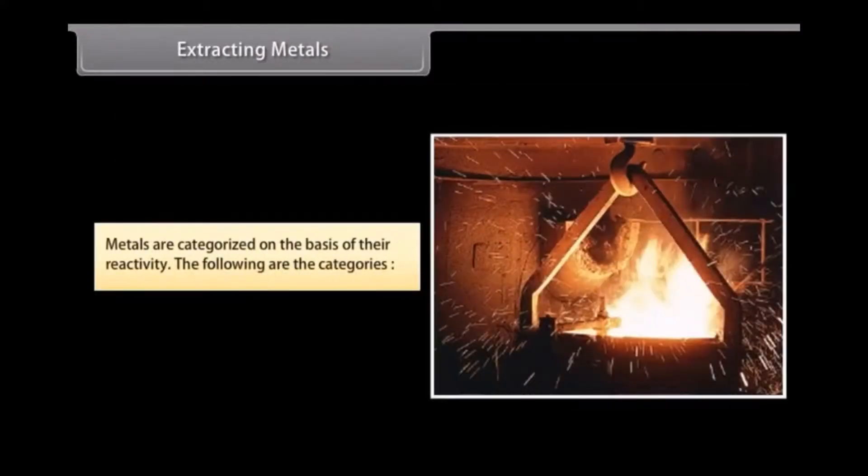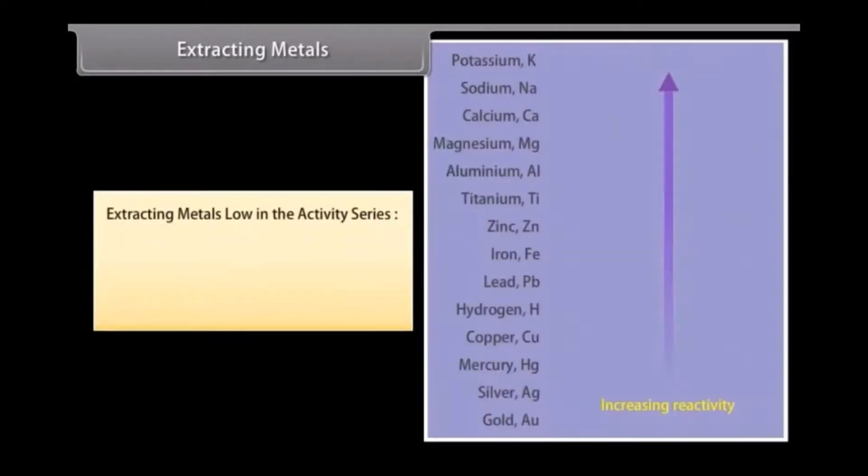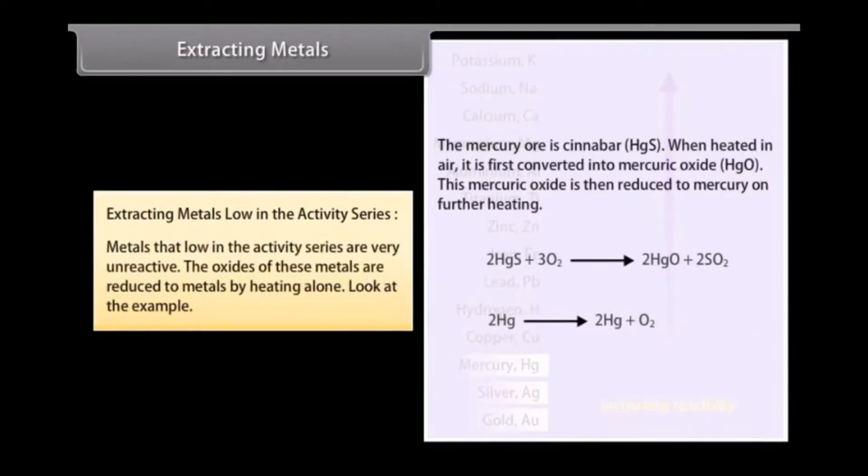Extracting Metals. After the metals are separate from their ores, they are classified based on their reactivity. The following are the various categories of metals grouped as per their reactivity. Extracting Metals Low in the Activity Series: Metals that are low in the activity series are very unreactive. The oxides of these metals are reduced to metals by heating alone.